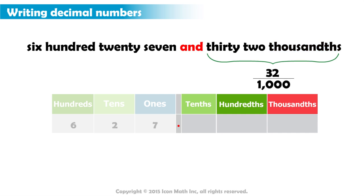Suppose we write 32 immediately after the decimal point. Three in the tenths place, two in the hundredths place, and leave the thousandths place empty. We will have 32 hundredths. And that's wrong.